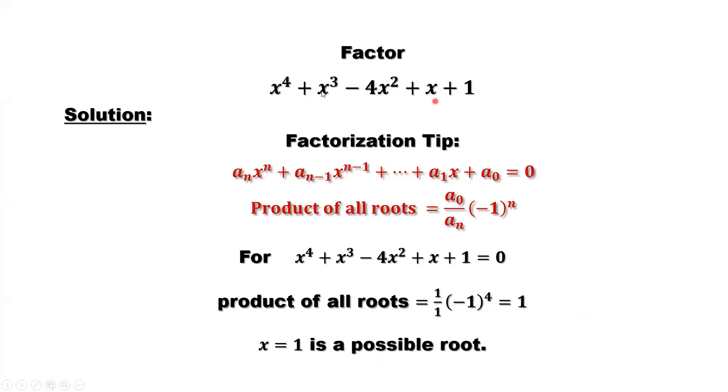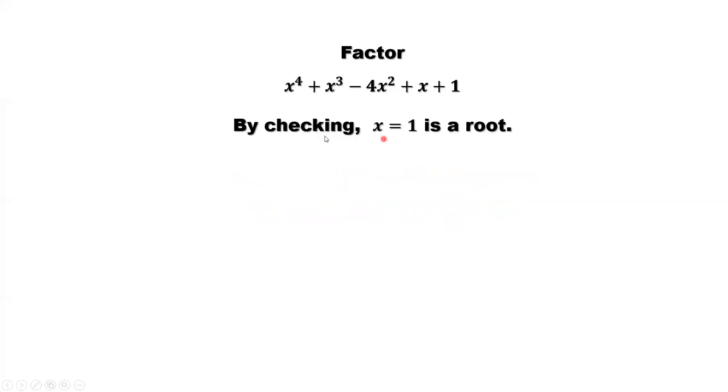That's a root for this one, which means that's zeros for this polynomial. By checking, x equals 1 is a root. How to check it? Replace x by 1, if this is equal to 0. Plug in here, 1, 1, negative 4, 1, 1. So here it is 0. So x equals 1 is a root.